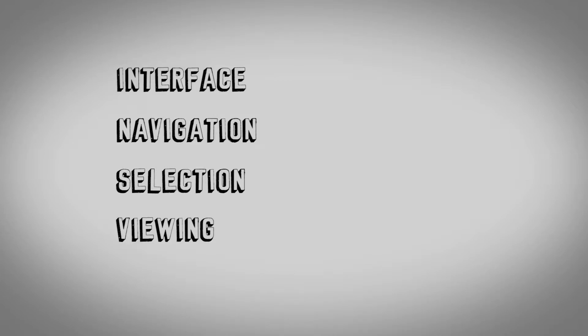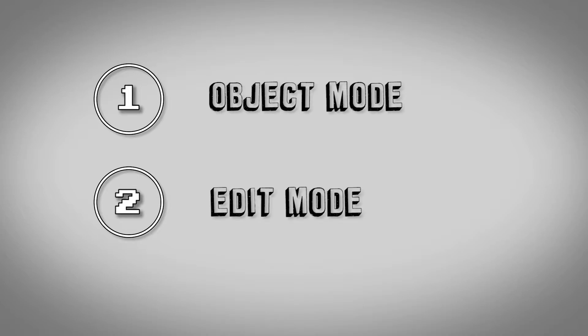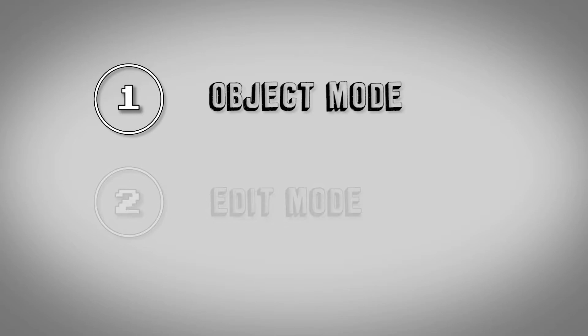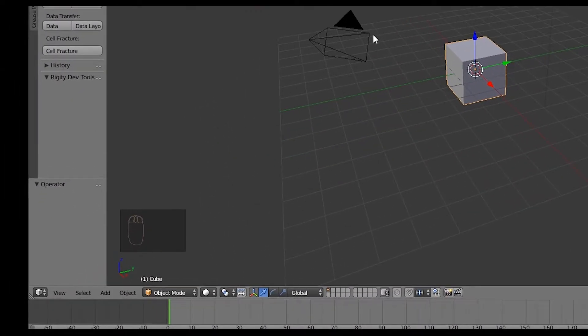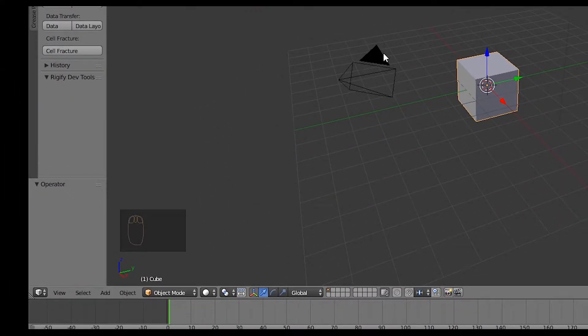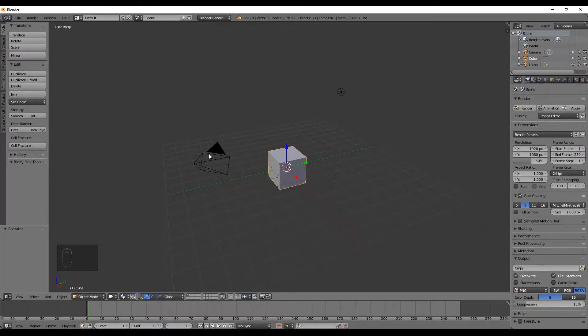In the last tutorial we saw the interface, navigation, selection and viewing. This time let's see the transform tools. There are two things to keep in mind: in Blender we have the object mode and the edit mode — those are the two main ones. Object mode lets you manipulate all objects, and edit mode is where modeling happens. If I miss a shortcut, you can always see what key I've used in the bottom left corner.